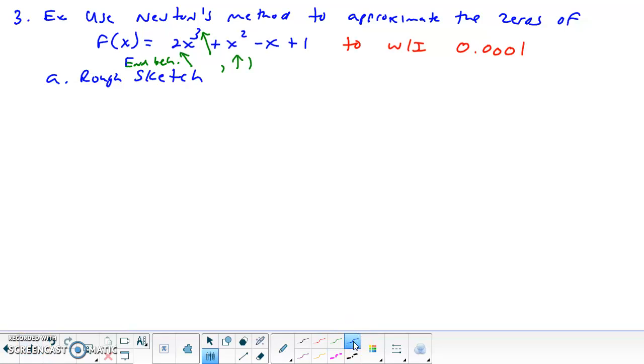Okay, so rough sketch. So we got the end behavior, and odd means that we are going opposite, right? So the left end behavior must be down and up. Alright, so we know we're down up.